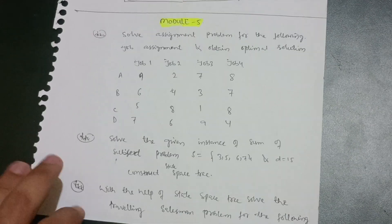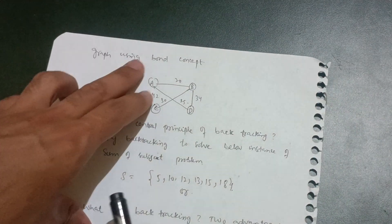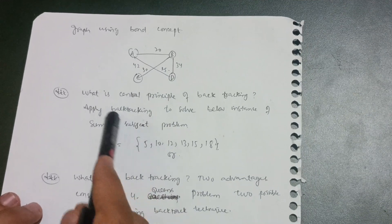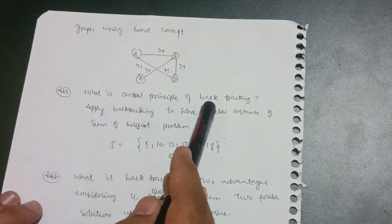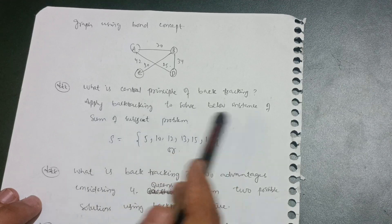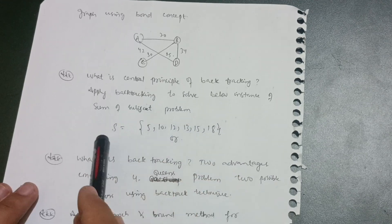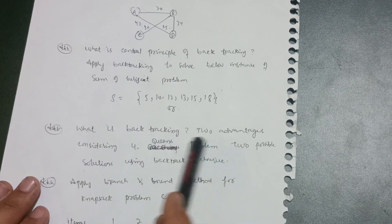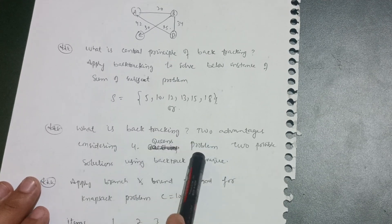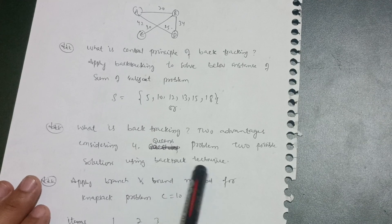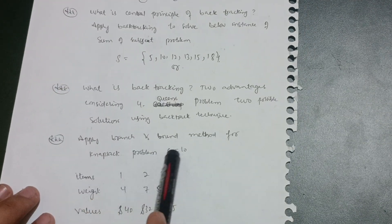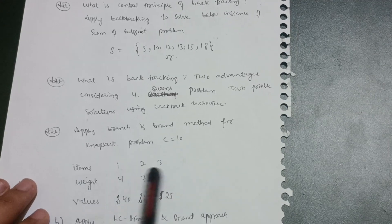Using the state space tree and branch-and-bound concept, solve the Traveling Salesman Problem for the given graph. Explain the central principle of backtracking and apply it to an instance of the sum of subsets problem. What is backtracking? Consider the four queens problem and find possible solutions using backtracking technique.